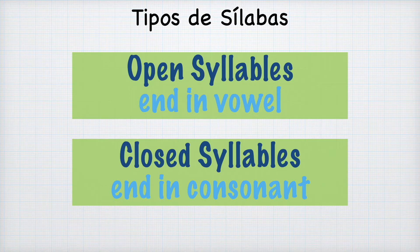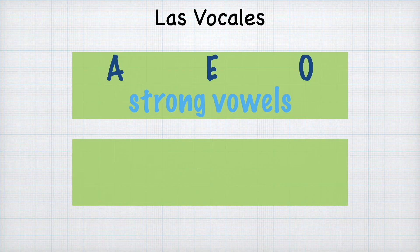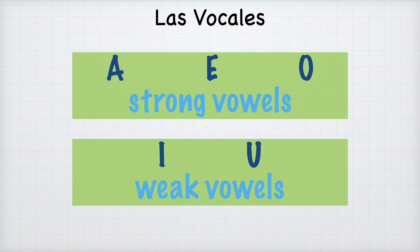¿Ya conoces las vocales? Do you know the vowels? It's important to understand the vowels as they are the center of the syllables. The vowels are A, E, I, O, U. A, E, and O are considered strong vowels, and I and U are considered weak vowels. This is important because the way the vowels are paired together dictates if they are within the same syllable or separate.